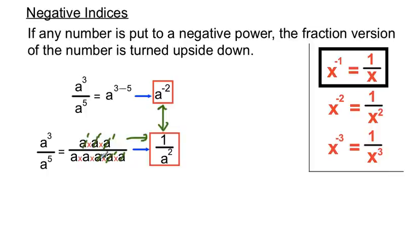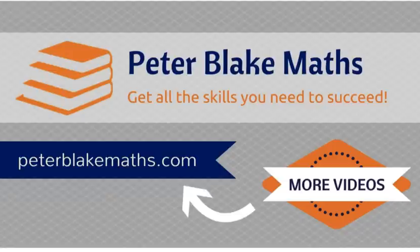There are lots of examples in this video. A negative index turns the fraction version of the terms upside down — so a to the minus 2 and 1 over a squared are equal to each other. I hope those examples help you in your studies. Visit peterblakemaths.com for all your maths video needs. Thanks for listening.